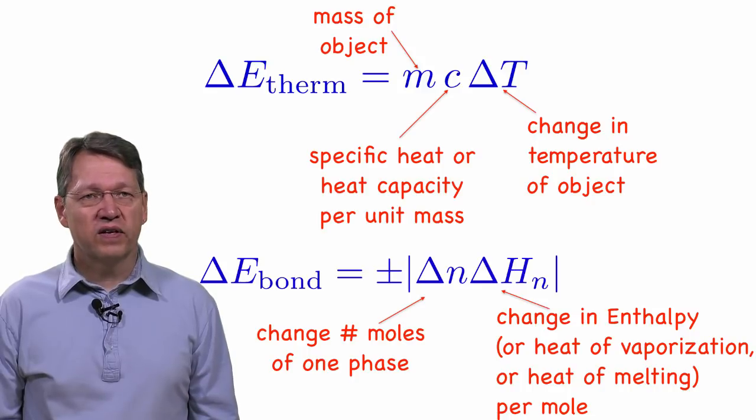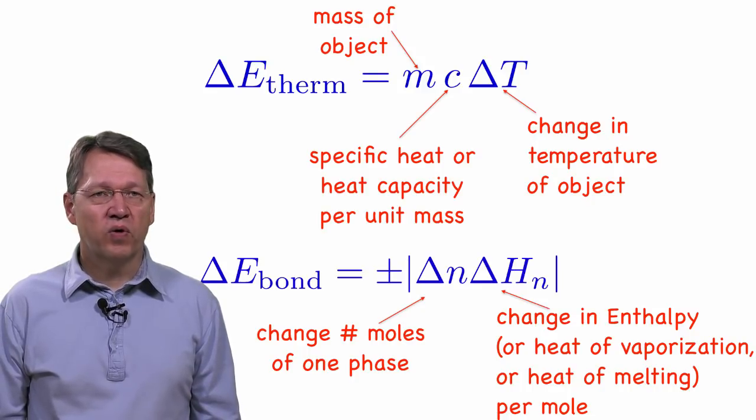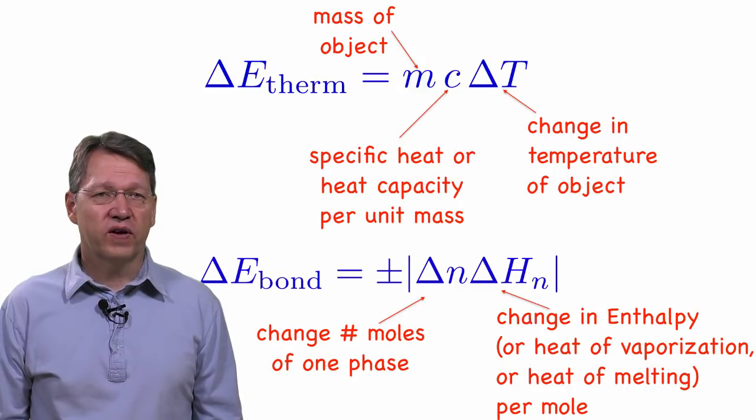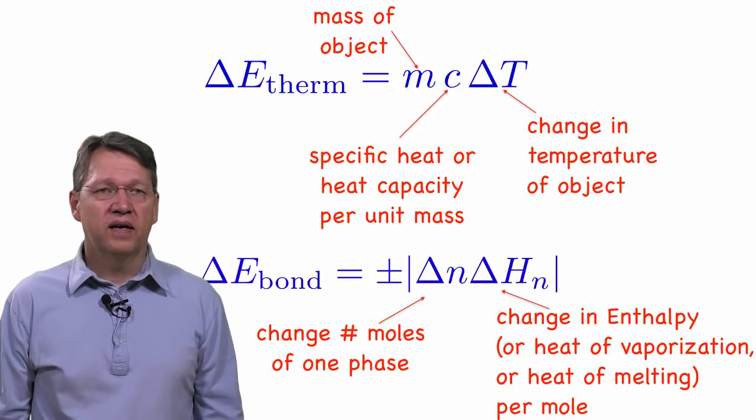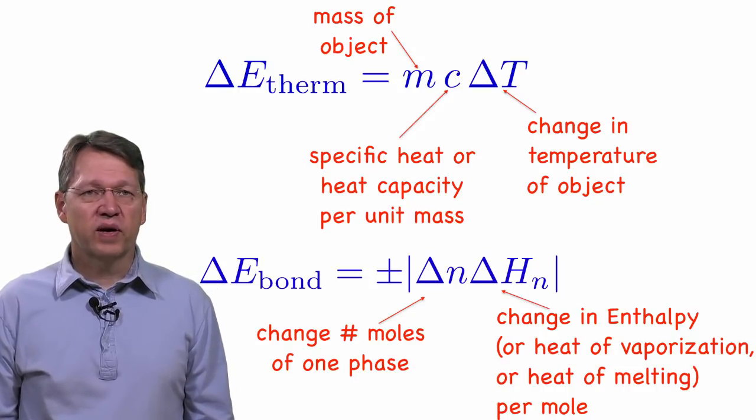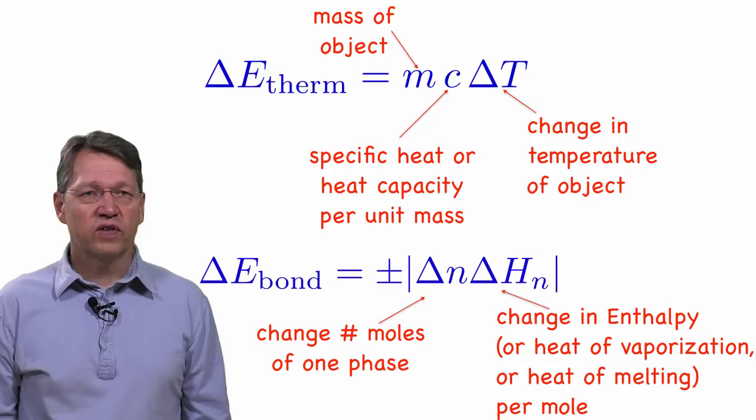Sometimes it is more convenient to give the change in enthalpy per mole instead of per unit mass. In that case, we need to multiply by the number of moles that underwent the phase or chemical change instead of multiplying by the mass. Each type of phase change or chemical reaction can have its own value for the change in enthalpy.